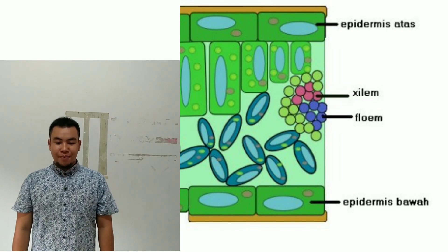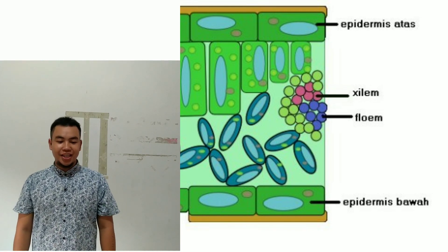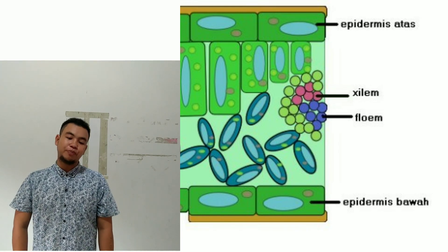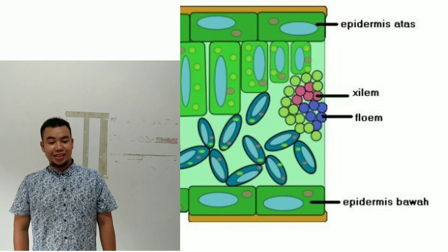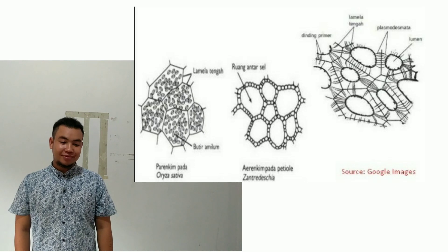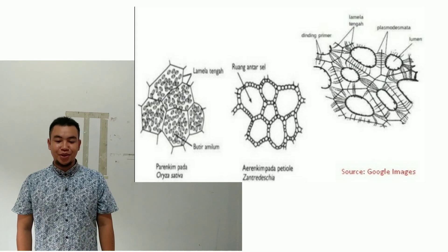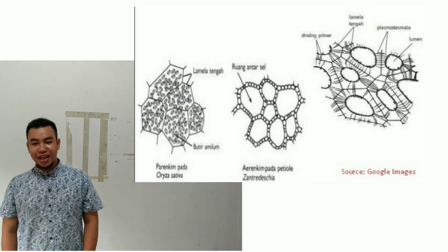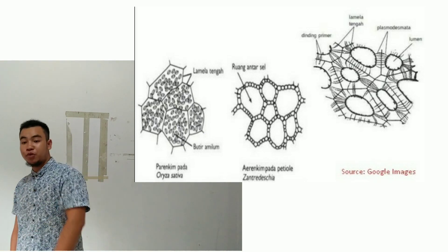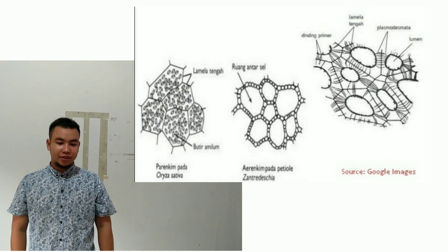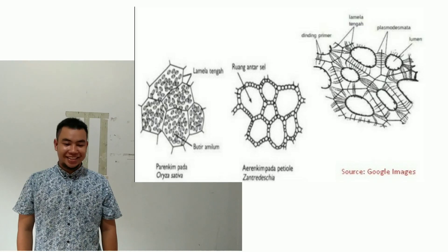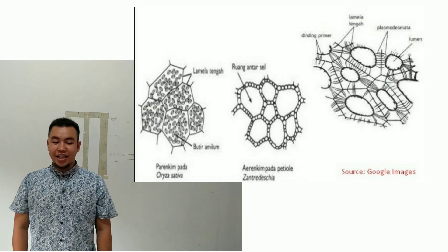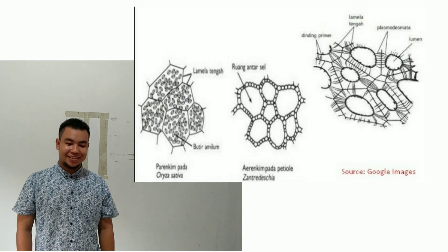Jaringan epidermis terdapat di seluruh permukaan tumbuhan, berfungsi sebagai pelindung jaringan-jaringan yang ada di bawahnya. Jaringan parenkim merupakan jaringan yang terdiri dari sel-sel yang telah dewasa tetapi masih dapat melakukan pembelahan, berfungsi menyimpan cadangan makanan, tempat fotosintesis, dan sebagai organ tumbuhan.